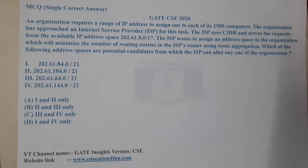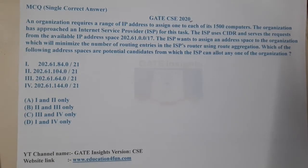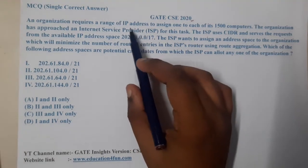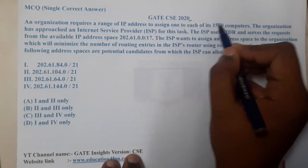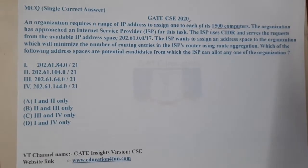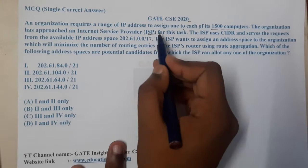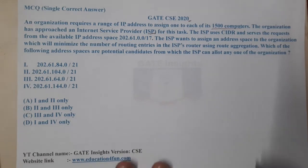Hello guys, we are back with our next lecture. This question belongs to GATE CSE 2020 — one of the latest questions. Even in 2021, in set one, we got one question on masking, so it's an interesting and easy topic. The question is: an organization requires an IP range to assign one to each of its 1500 computers, and they have approached an ISP for this task. The ISP uses CIDR — Classless Inter-Domain Routing.